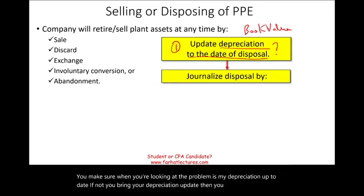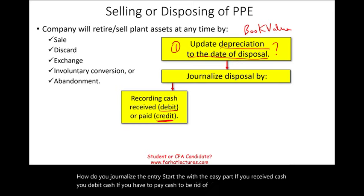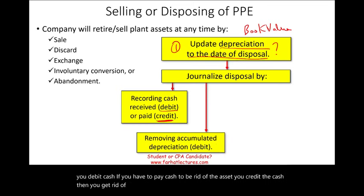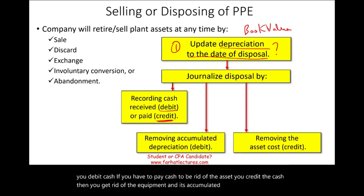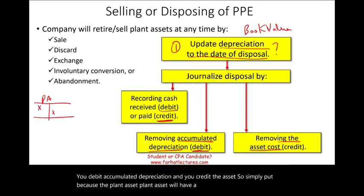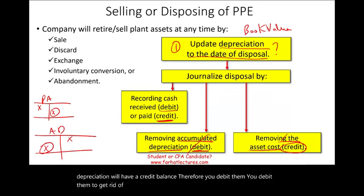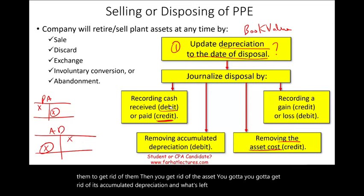Then you journalize the entry. Start with the easy part: if you received cash, debit cash; if you have to pay cash to get rid of the asset, credit cash. Then you get rid of the equipment and its accumulated depreciation — debit accumulated depreciation and credit the asset. Plant assets have a debit balance, so you credit them to remove them. Accumulated depreciation has a credit balance, so you debit it to remove it. What remains is to determine whether you have a gain or a loss. The gain takes a credit; the loss takes a debit.